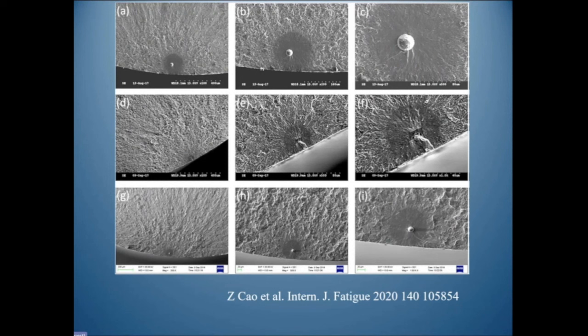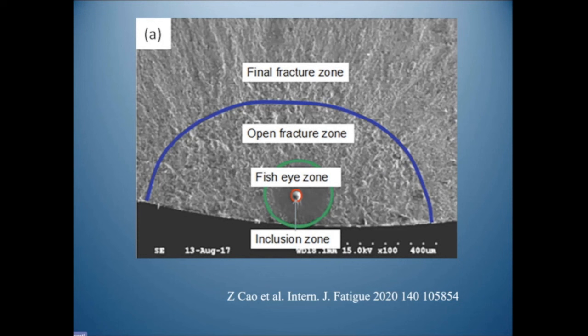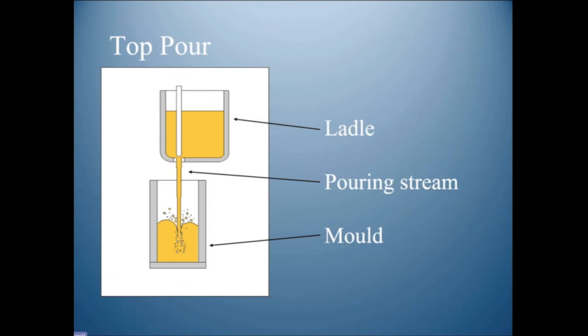Recent research shows the very symmetrical features of fish eyes and a mirror-smooth region around the inclusion. That mirror smoothness is difficult to explain unless you are opening a bifilm, where you expect exactly that. Many people have done a lot of research on fish eyes, but as far as I know, what I have just described is the only explanation that fits all the facts.